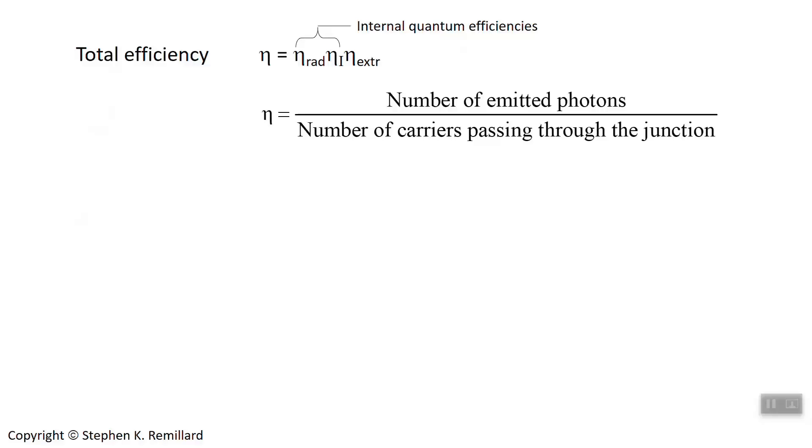I indicate these two, the radiation efficiency and the current efficiency as internal efficiency, whereas extraction efficiency really has to do with how the semiconducting die has been prepared. That's really not an internal thing. But the internal efficiencies have to do with the quantum mechanical interactions going on inside the semiconductor. So you call them quantum efficiencies.